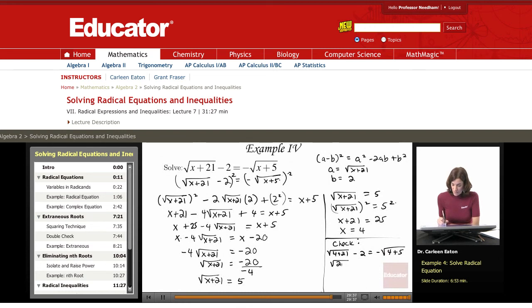This gives me the square root of 25 minus 2 equals minus square root of 9. Square root of 25 is 5 minus 2 equals minus square root of 9, which is 3. So that gives me negative 3. This is 5 minus 2 equals 3. This is not true.